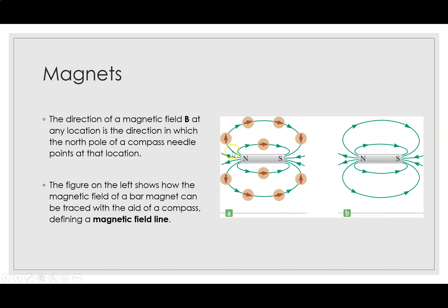The figure on the left shows how the magnetic field of a bar magnet can be traced with the edge of a compass, defining magnetic field lines. Magnetic field lines move from the north pole to the south pole.